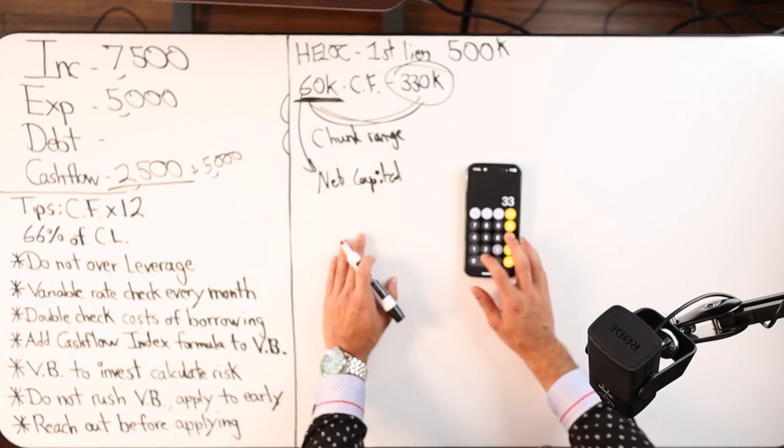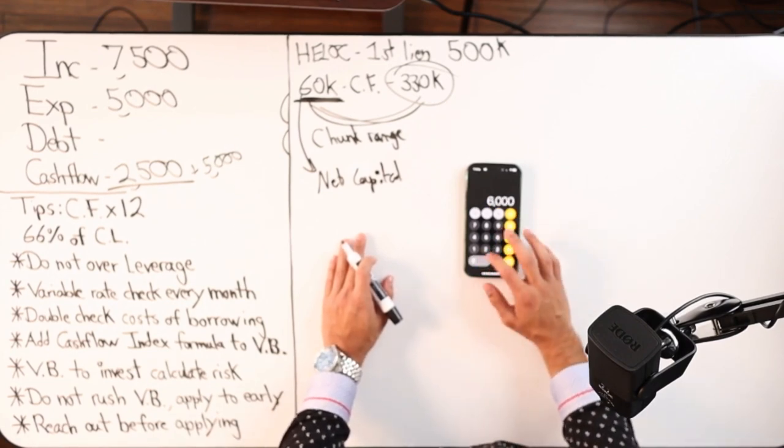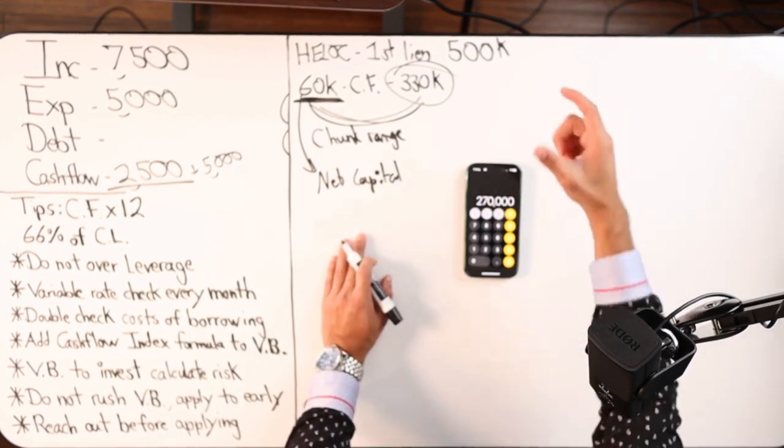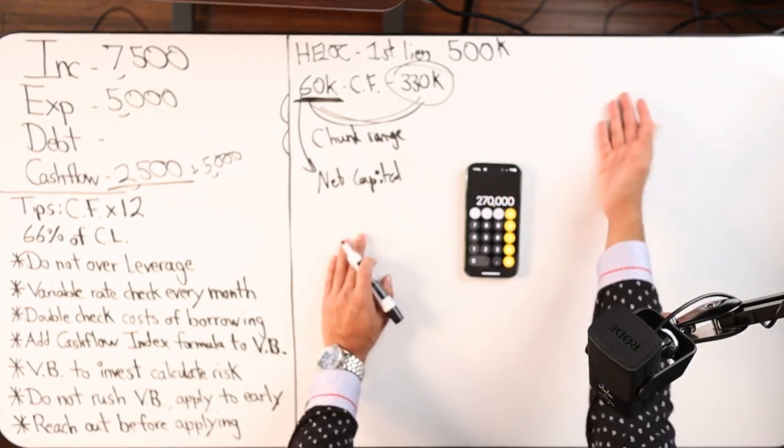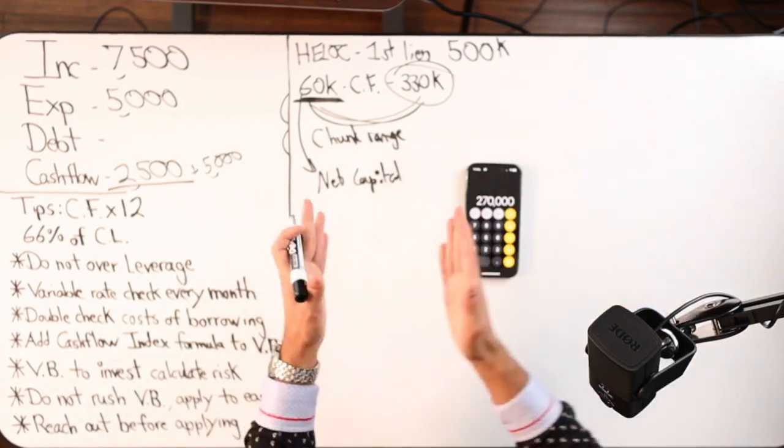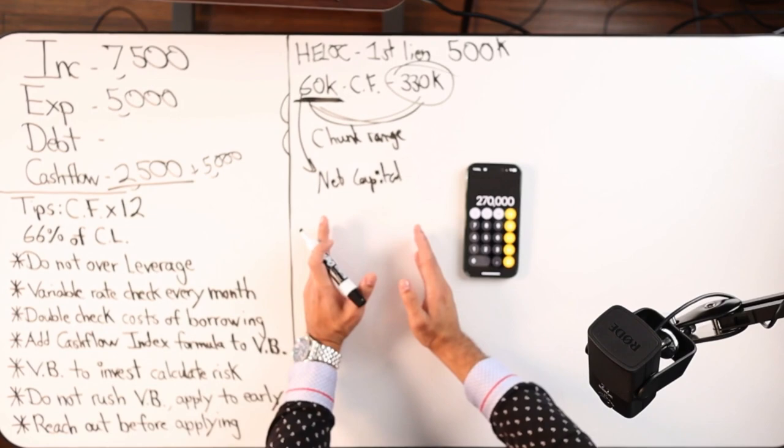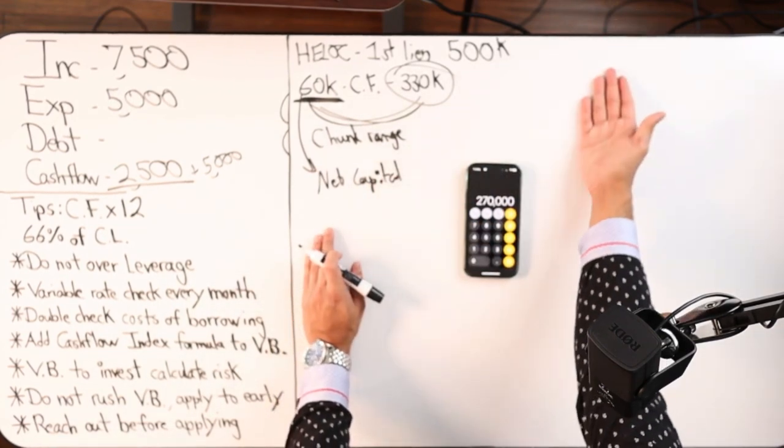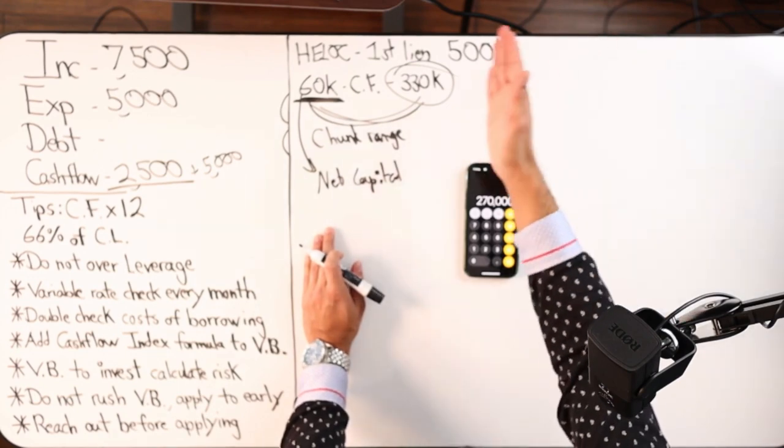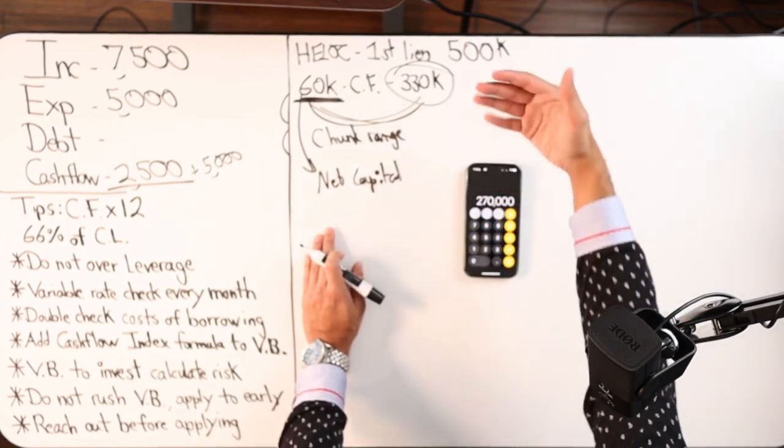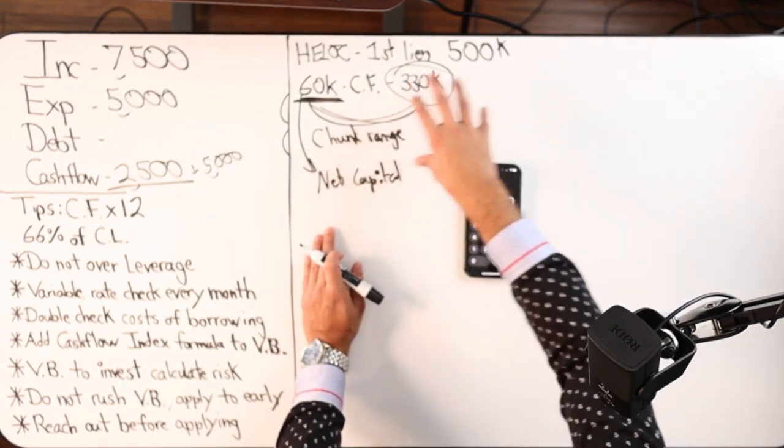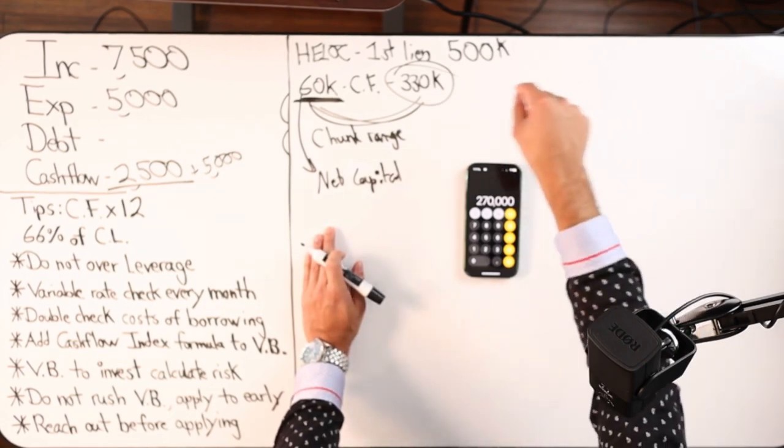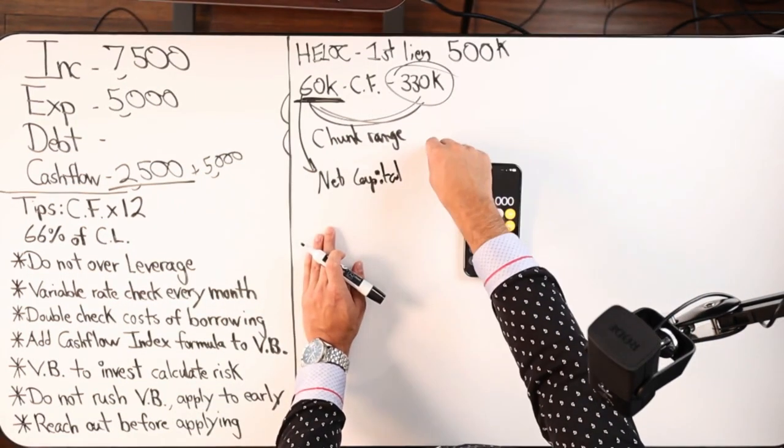So $330,000 minus 60, that's $270,000 now at risk, technically. The whole 330 is at risk, but in the first year you have 60 grand on hand and now you're going to invest. So you got the 60 and you have this line of credit at $500,000 and then 66% of that is $330,000. Here is a good math equation to run. If I invest $330,000 and it goes south, how many years will it take me to recover from that investment?